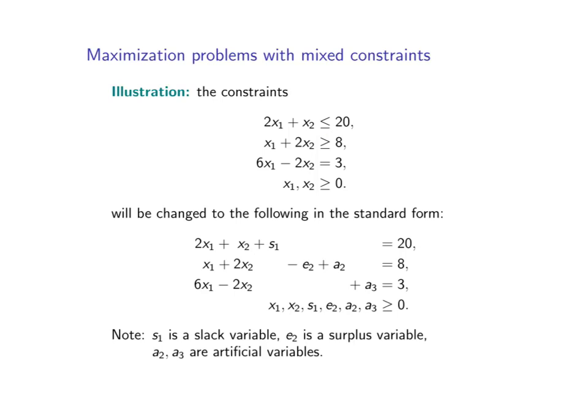If the constraint involves a greater than or equal to symbol, we will subtract a surplus variable and at the same time add an artificial variable to the left-hand side. If the constraint involves an equal sign, we will add an artificial variable to the left-hand side. All these variables added are non-negative.